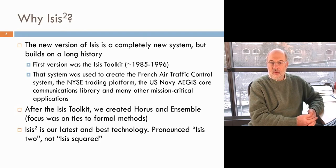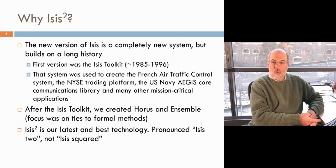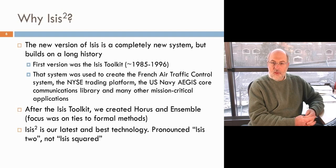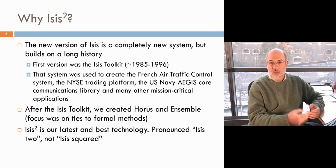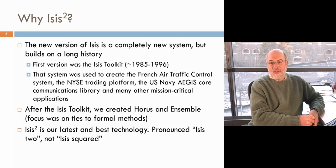An early version of ISIS, built almost 15 years ago, was used — and still is — in the French and European air traffic control system and at the New York Stock Exchange, where it ran the trading floor for more than a decade. There were plenty of failures during that period, but ISIS helped them orchestrate seamless self-repair. It was also used in the U.S. Navy Aegis, chemical plants, and telecommunications switching systems — a very powerful and popular system.